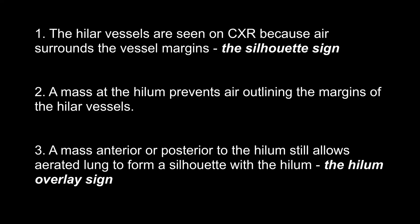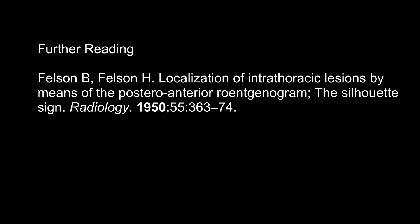In summary, the hilar vessels are seen on the chest x-ray because air surrounds the vessel margins — this is the very nature of the silhouette sign and is very important in radiology. A mass which is at the hilum, whether mediastinal or pulmonary in origin, prevents air outlining the margins of the hilar vessels. The hilum overlay sign allows us to understand whether a mass is anterior or posterior to the hilum because the vessels can be seen through it. This was originally described by Benjamin Felson in his radiology article in 1950, and I would suggest you have a look at this for further reading.